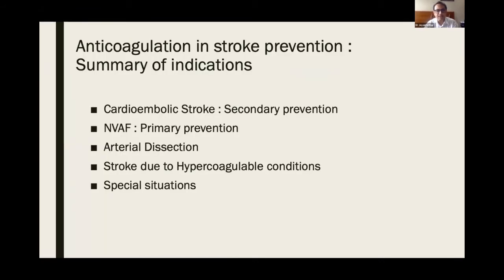Anticoagulation in stroke prevention — the indications are mainly for cardioembolic stroke secondary prevention. Non-valvular atrial fibrillation primary prevention is also sometimes done with anticoagulation. Some cases of arterial dissections where we use oral anticoagulations — I will come to that later. And some cases of hypercoagulable conditions with stroke and special situations.